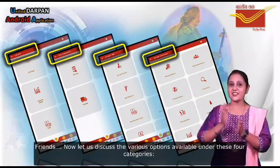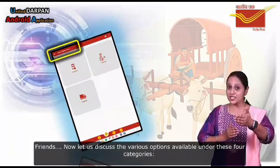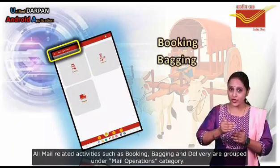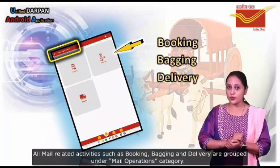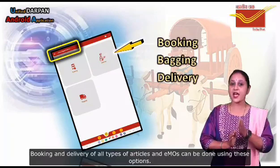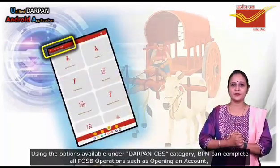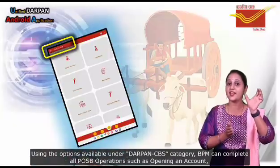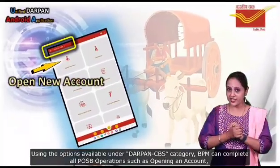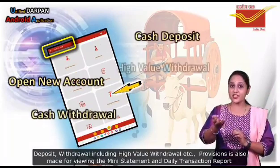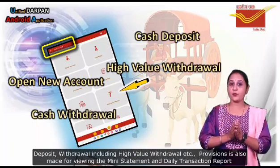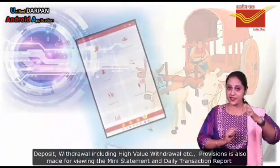Now let us discuss the various options available under these four categories. All mail-related activities such as booking, bagging, and delivery are grouped under the Main Operations category. Booking and delivery of all types of articles and the EMOs can be done using this option. Using the options available under Durpan CBS category, the BPM can complete all POSB operations such as opening an account, deposit, withdrawal including high value withdrawal. Provision is also made for viewing the mini statement and daily transaction report.